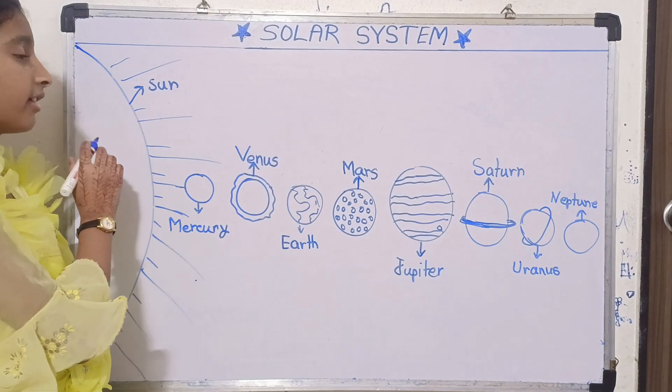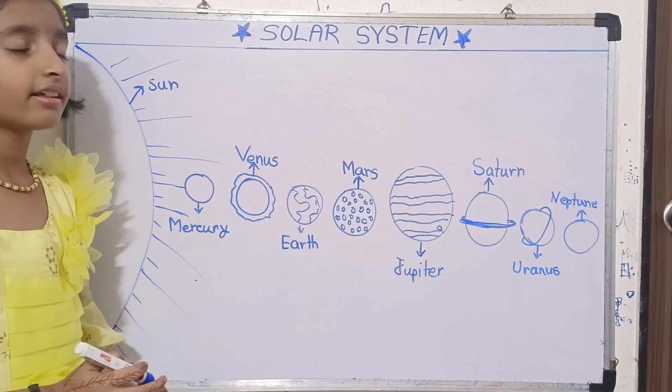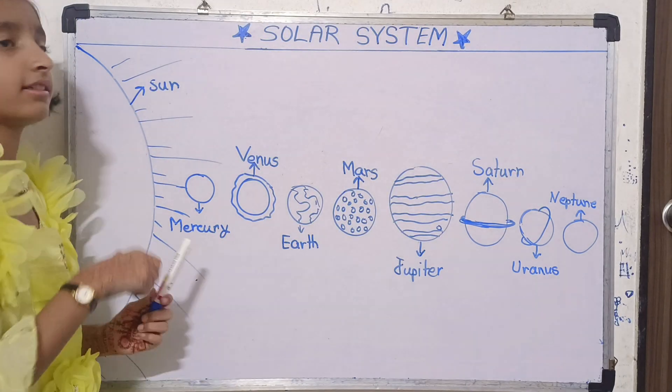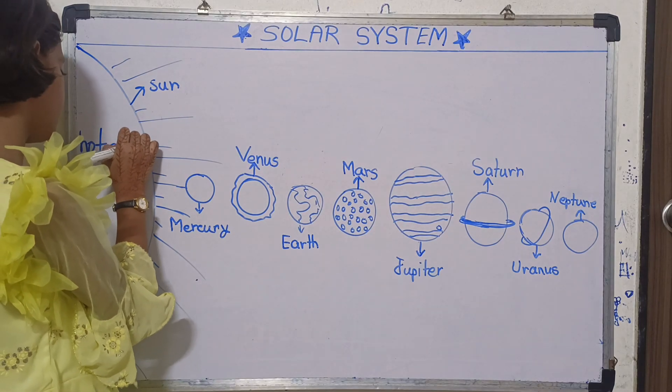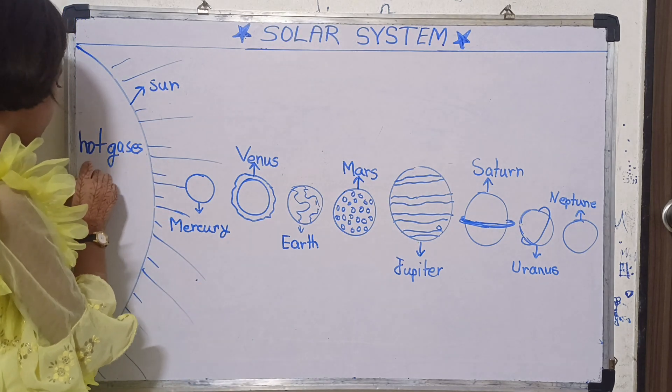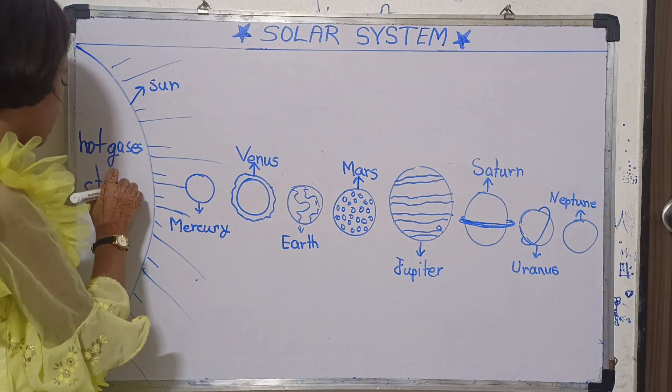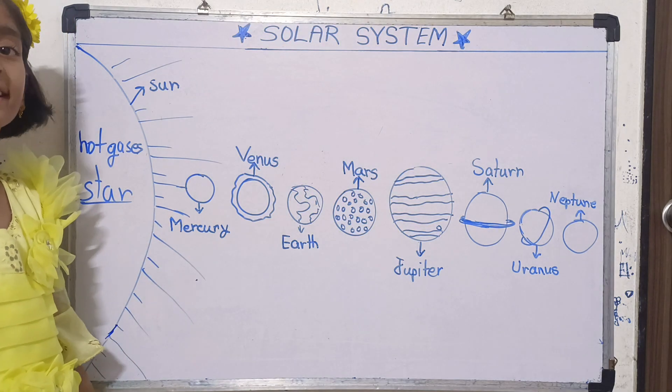Sun. The Sun is the nearest star from our Earth and it is made up of hot gases. It is also called a star and the Sun has its own heat and light.